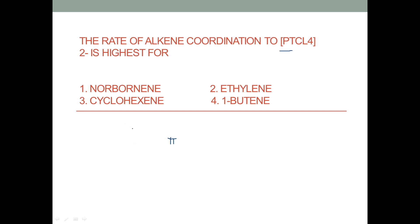There is back-donation: the metal donates electrons to the anti-bonding orbital of the alkene, which is the LUMO — the lowest unoccupied molecular orbital, or the π* orbital. So the alkene donates electrons to the metal d-orbital, and the metal donates electrons back to the π* orbital. This is a concerted, one-step mechanism.